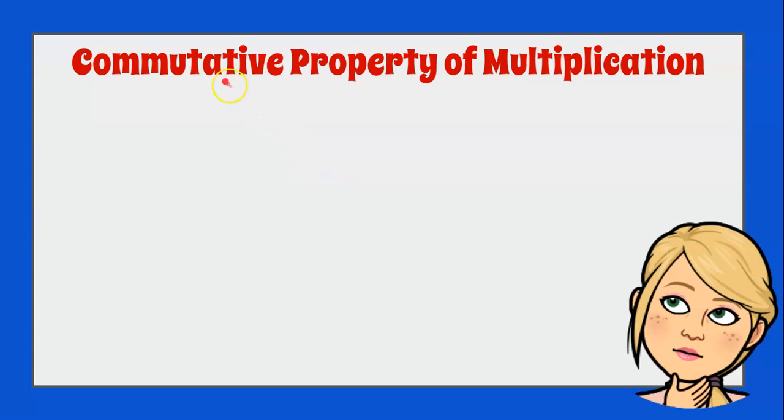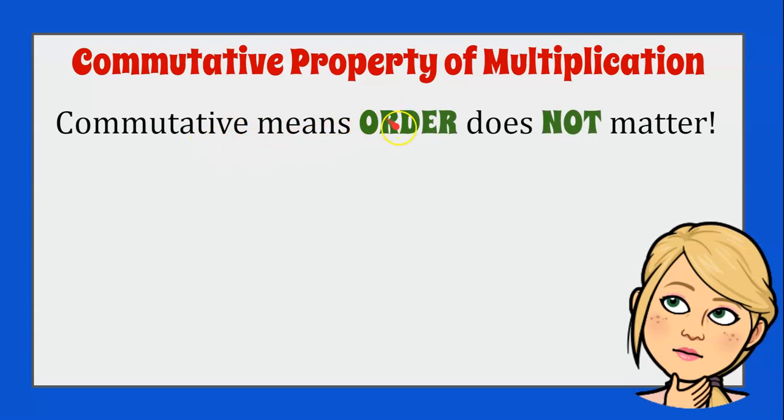Now let's talk about the commutative property of multiplication. Commutative means that order does not matter. So it means the order in which you multiply values doesn't matter. If we have a value a multiplied by a value b, using a and b to represent any number, that same number a and that same number b, the order that you multiply could be reversed and they're equivalent, you would get the same value.